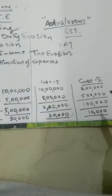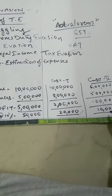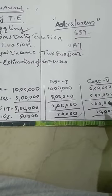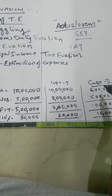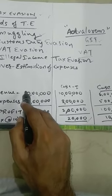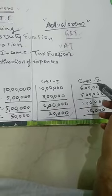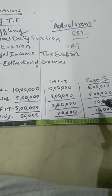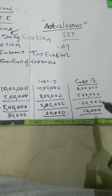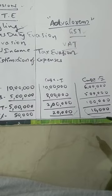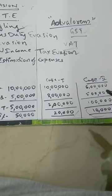In Case 2, the tax liability is 10,000 rupees because the profit shown is 1 lakh. How is the profit only 1 lakh? There is no change in expenses, but the person showed income of only 6 lakhs rupees. His actual revenue was 10 lakhs but he shows only 6 lakhs. So 6 lakhs minus 5 lakhs gives profit of 1 lakh, and he pays 10,000 rupees tax. But the actual tax he should pay is 50,000 rupees. He is paying only 10,000 — this is tax evasion.